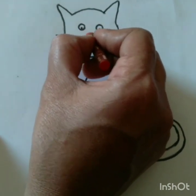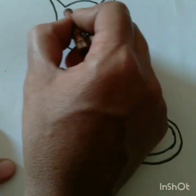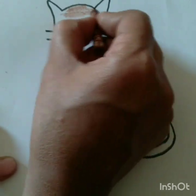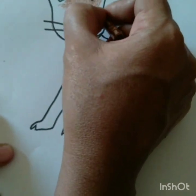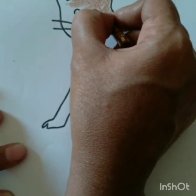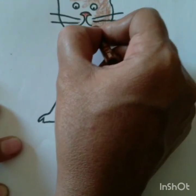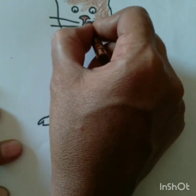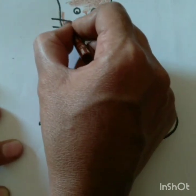Children, now we are coloring its face with brown crayon. Children, first we are coloring its ears. Children, you can use brown, white or black color for coloring the cat.